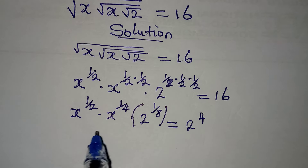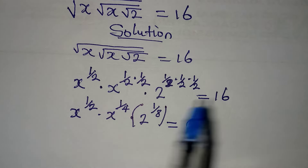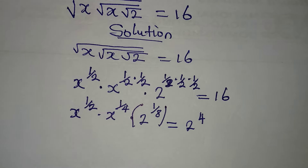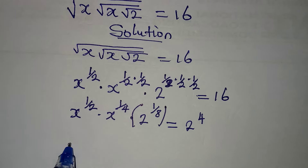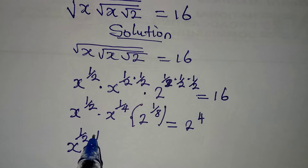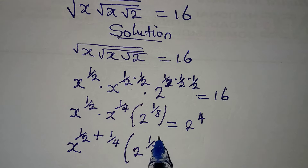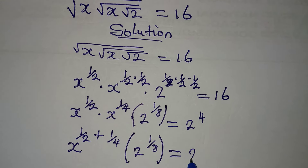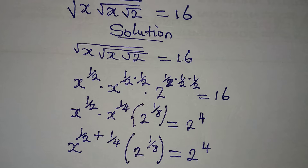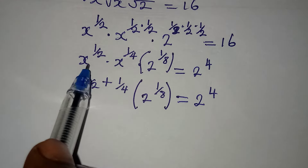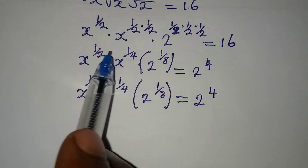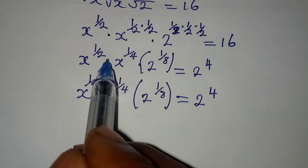Let me group this so I can deal with the first two terms. Pick one of the bases, then I will add the powers: 1 over 2 plus 1 over 4. Then I still have 2 to the power of 1 over 8, and everything is equal to 2 to the power of 4. What I did here is pick one of the bases and add the powers, because we are multiplying.